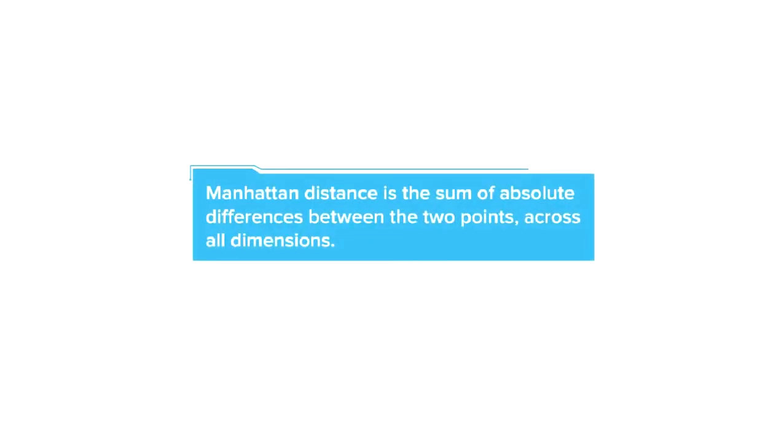So let's first put a definition to it. Manhattan distance is the sum of absolute differences between the two points across all dimensions. Now this might seem difficult on first reading, but it is very simple to understand.